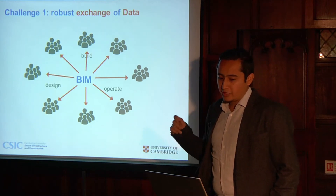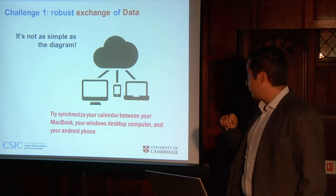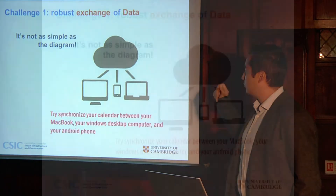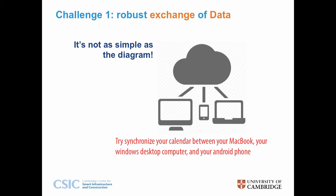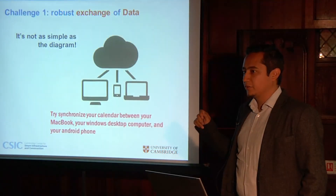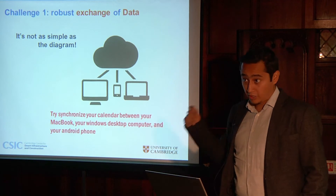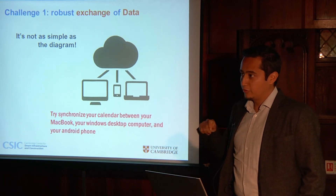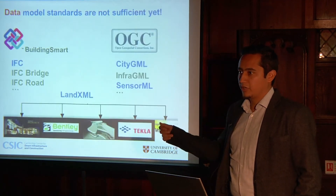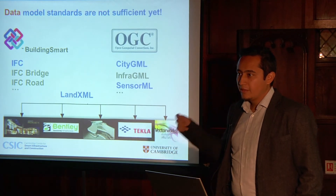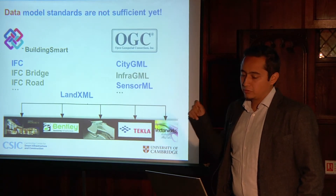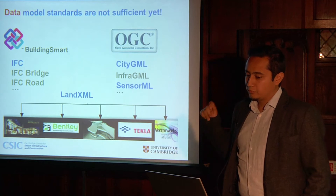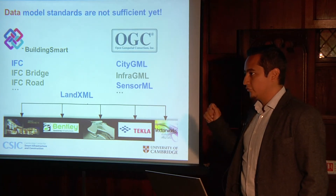One of the main challenges to be able to exchange data — and I have an example here — is that not all our data goes to the cloud; it actually goes to servers underground. Synchronization of data is very difficult. Just try to synchronize your calendar between your MacBook, your Windows desktop computer, and your Android phone. One obstacle to that exchange of data is that model standards are not sufficient yet.